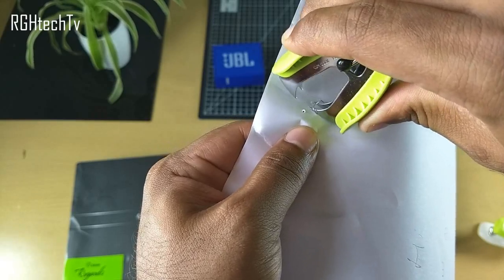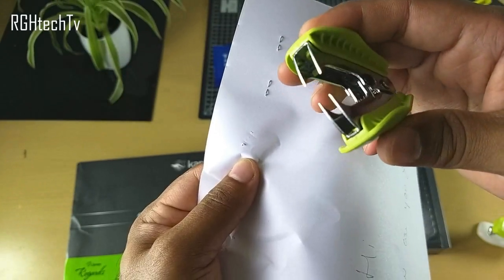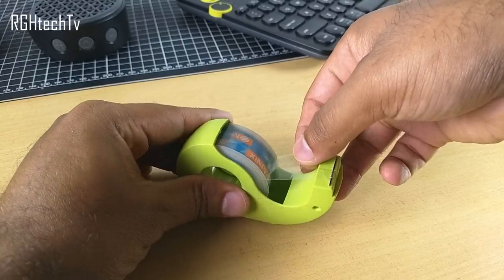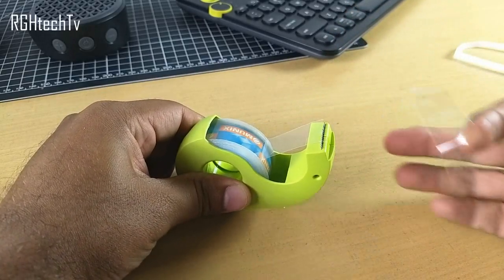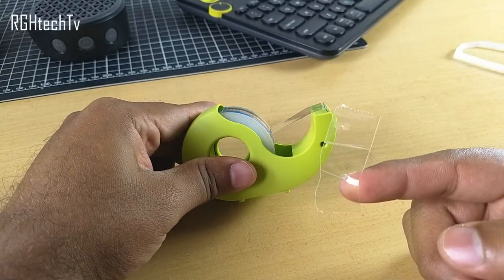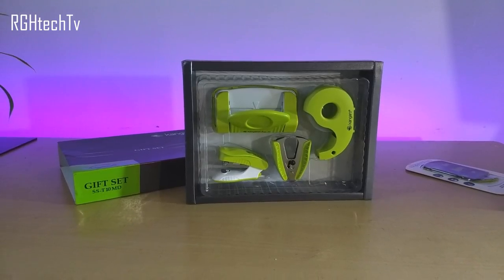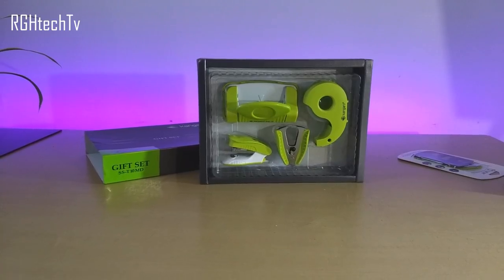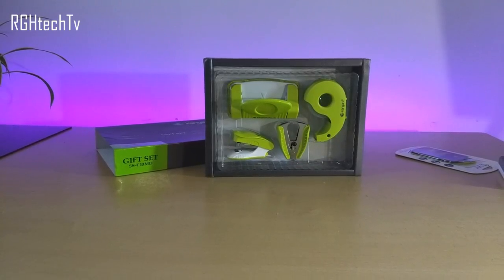Next we also get a staple remover which is a must have in my opinion. Then we have very good looking paper punch and a tape dispenser with tape included in the box itself. These look amazing on the desk, they add good aesthetics to be honest. I love the color accents and more than anything guys it's very useful, very affordable and it's a perfect gift set for anyone and everyone.